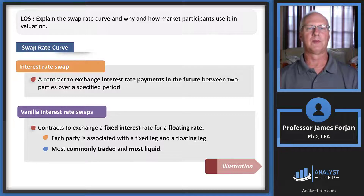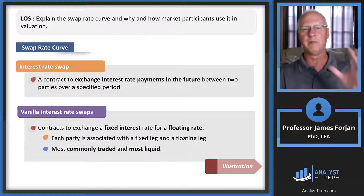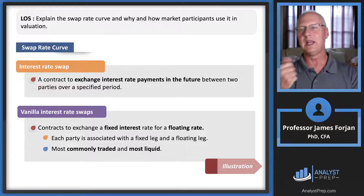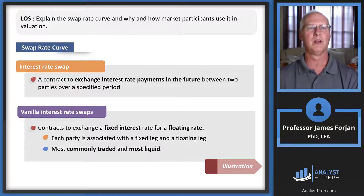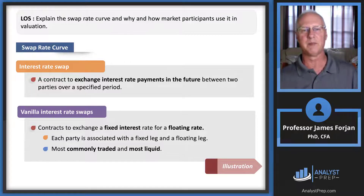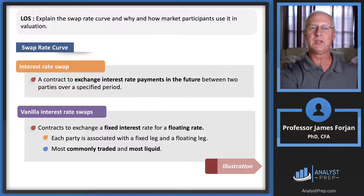Now let's look at the swap rate curve. Here's an analogy: suppose you have a peach tree and your neighbor has an apple tree. Eventually both families get tired of their own fruit, so they agree to swap. In a similar way, an interest rate swap involves swapping cash flows — specifically exchanging a fixed interest rate for a floating rate.